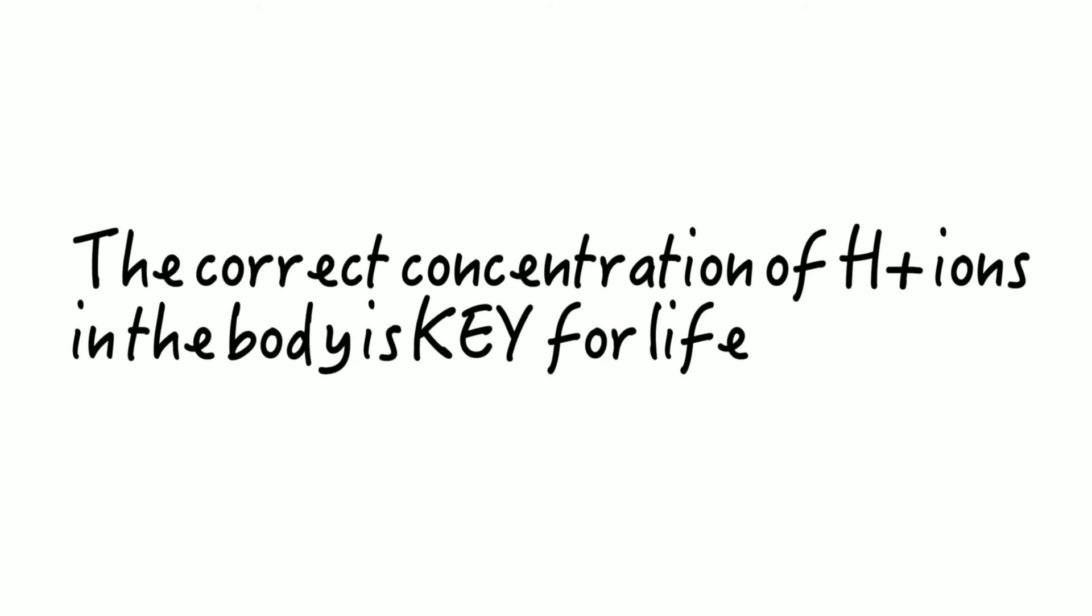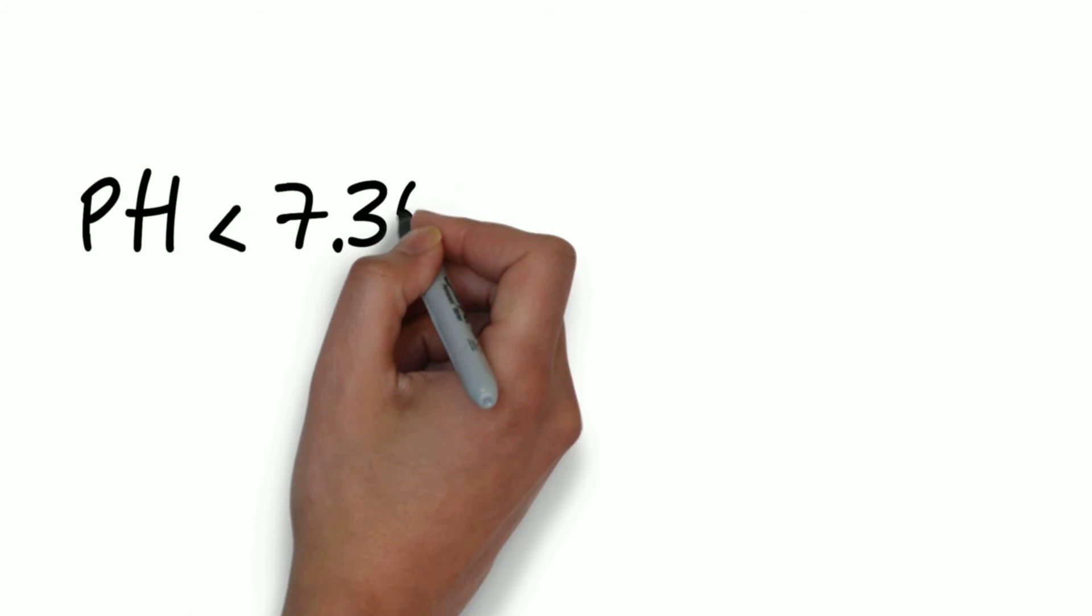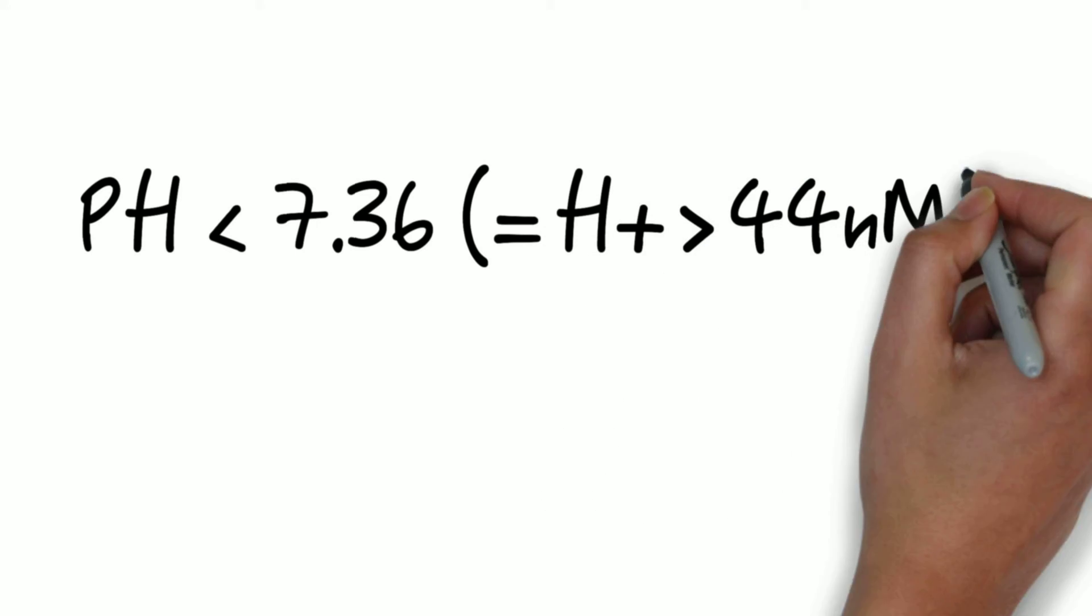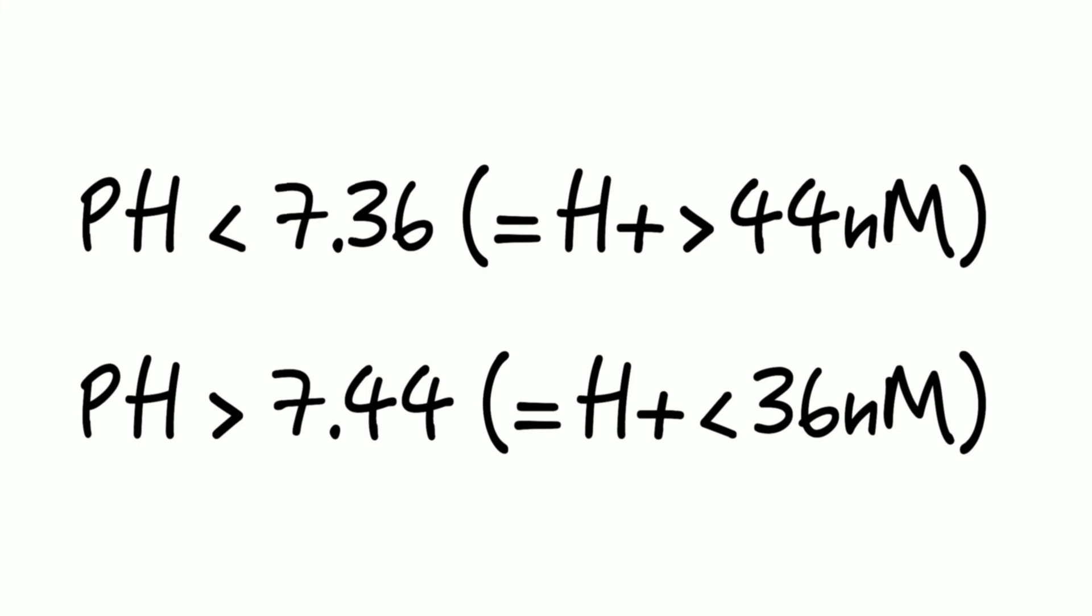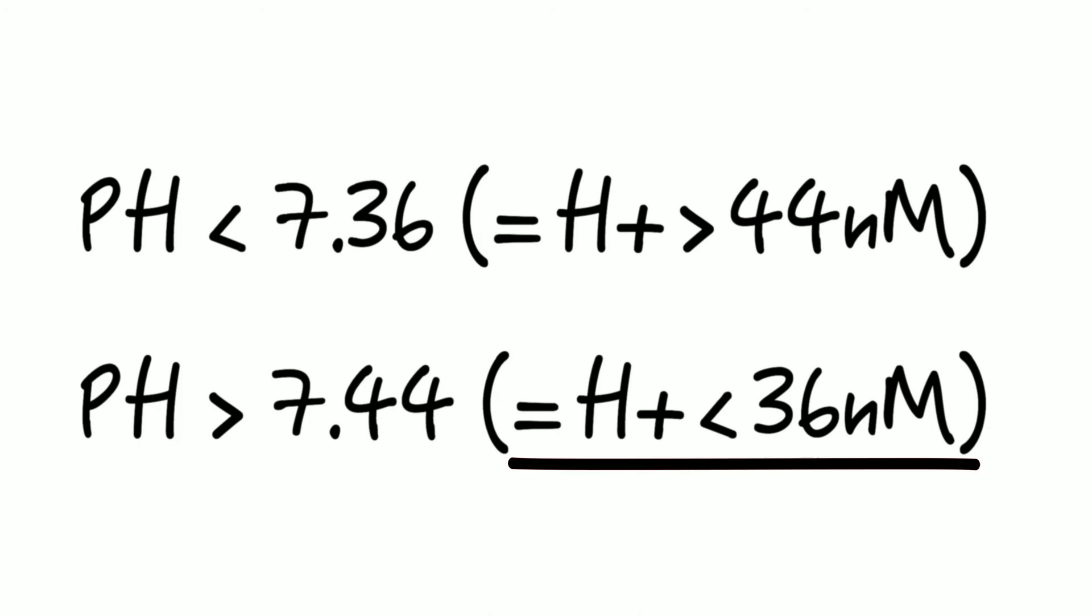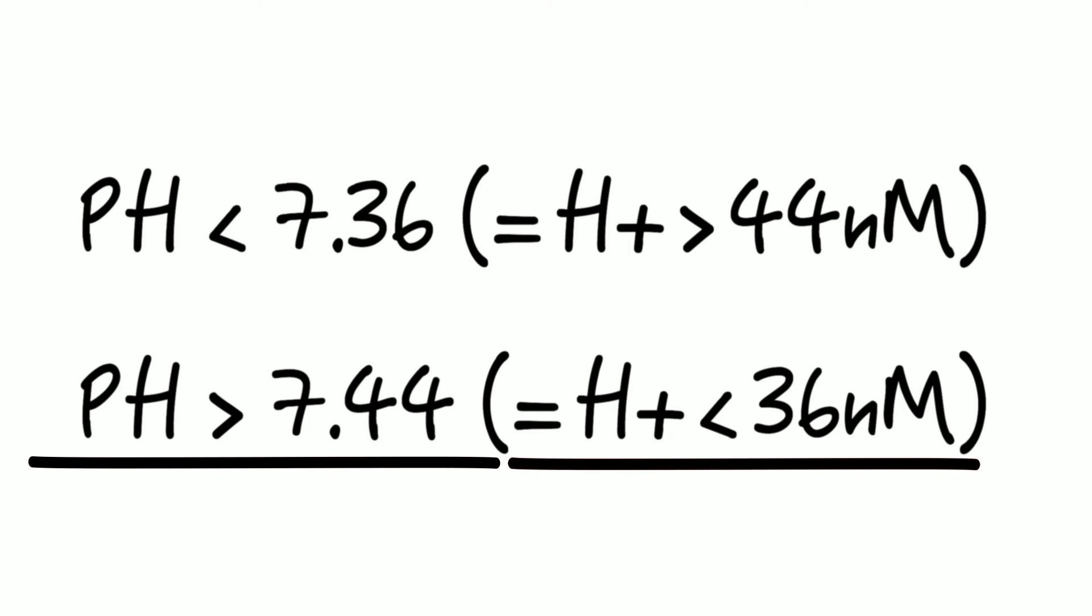The correct concentration of hydrogen ions in the body is key for life and it's regulated in a very narrow range. And that range is between 44 and 36 nanomoles per liter. So if the concentration of hydrogen ions is below 36 nanomolar, then that means that the pH will rise above 7.44. This would be called alkalosis.